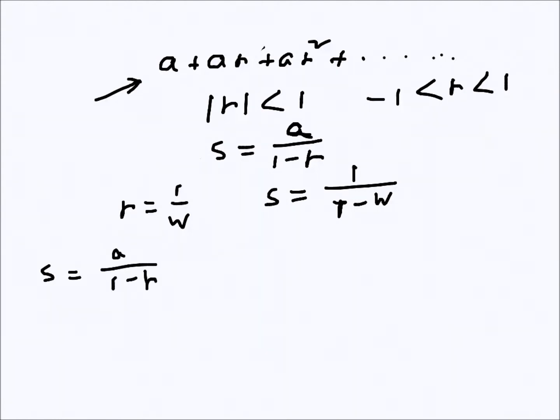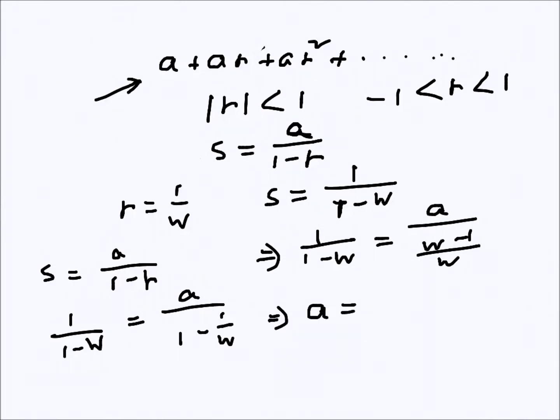S is given by 1/(1-w), while a we don't know. R is 1/w, so 1/(1-w) = a/(1-1/w), which becomes aw/(w-1). If we rearrange to solve for a, we get minus (1-w) over (1-w).